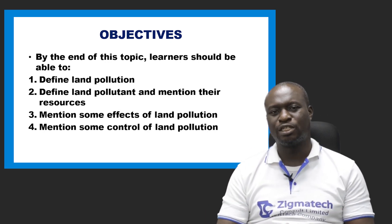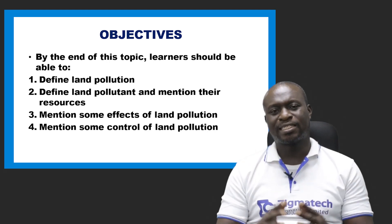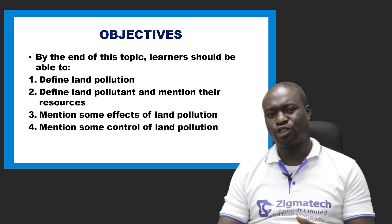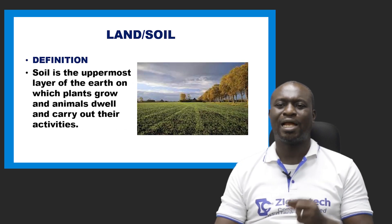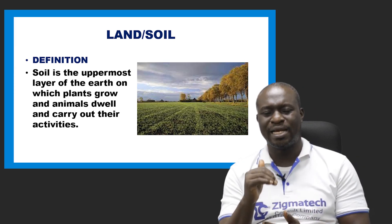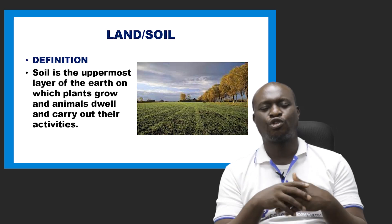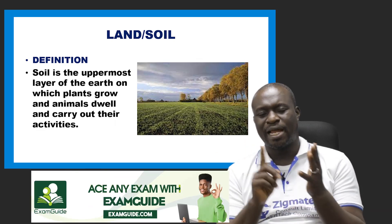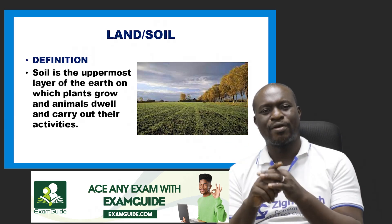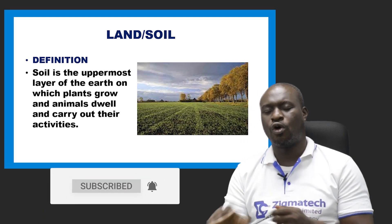These are the areas we are going to cover in this particular topic. Before we go into land pollution, I would like us to have a brief knowledge of what land or soil is. Soil can be defined as the uppermost layer on which plants grow, animals dwell and carry out their activities.